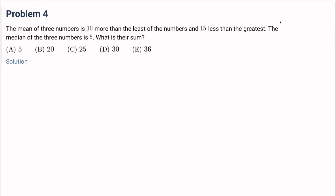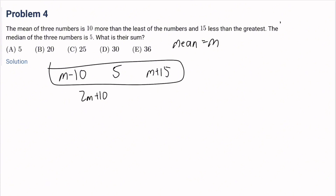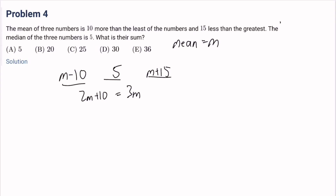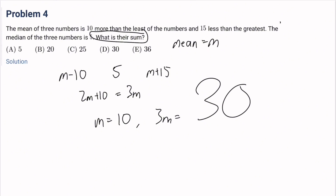Number 4: the mean of three numbers is 10 more than the least and 15 less than the greatest. The median is 5. Let the mean be M, so the least number is M minus 10, the greatest is M plus 15, and the median is 5. The sum is 2M plus 10, but since M is the mean of three numbers, the sum equals 3M. So 3M equals 2M plus 10, M equals 10, and 3M equals 30. The answer is D.